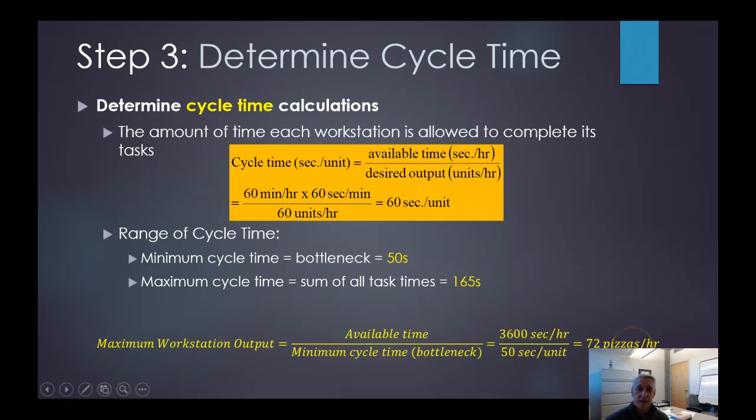So that becomes our maximum output that we could possibly get for the whole workstation. So it's our available time again divided by that minimum cycle time. So we at least have to take 50 seconds per unit, assuming we're not changing our rollout method. So that means the peak that we could get is 72 pizzas per hour. Now, fortunately for us, that is greater than the 60 pizzas per hour that Vicki's trying to get. So it's possible. We now know that it's possible to do so. Now, if this number was lower than our desired, we'd be in a pickle. Then that would mean that's not going to work quite that way. We'd either have to work on this bottleneck to figure out how we can get that time down or add more stations.